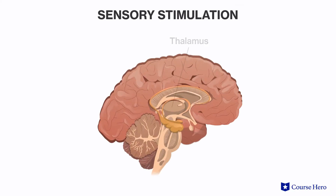These signals then pass through the thalamus, a brain structure below the cortex that acts as a relay station for sensory systems. It's then routed to areas of the brain specialized to process that information — for example, the occipital lobe processes visual signals.